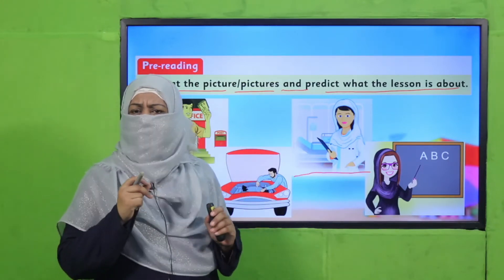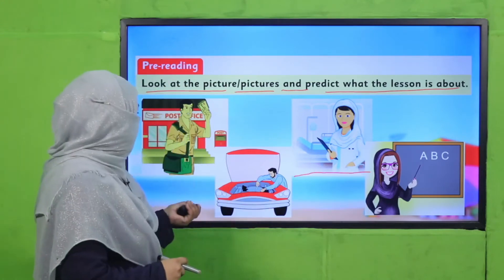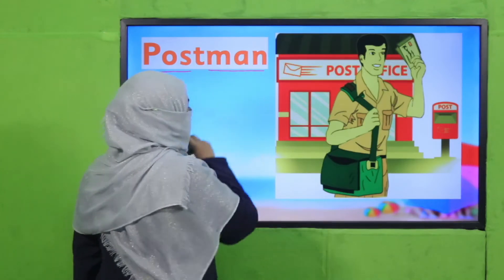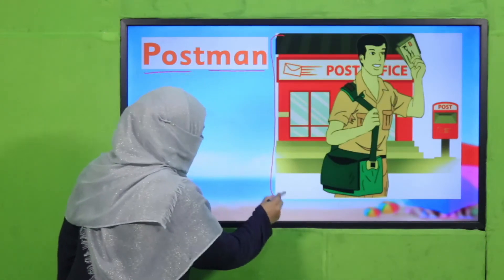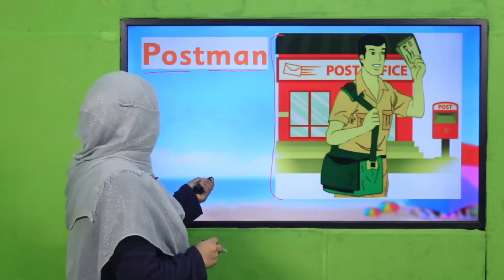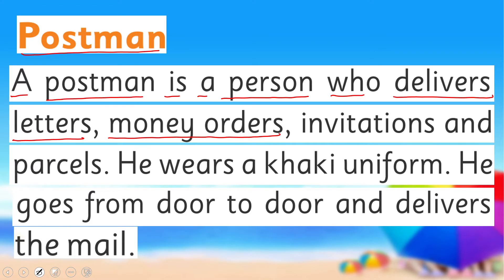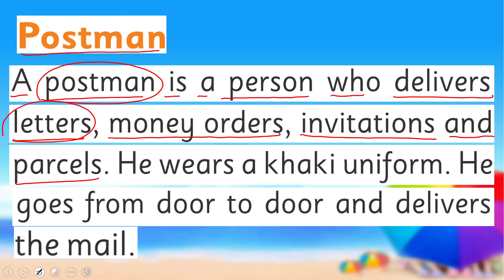We are going to learn about a few professions mentioned in your book. The first one is 'postman'. Look at the picture — he is a postman. What does a postman do? Listen carefully. A postman is a person who delivers letters, money orders, invitations, and parcels.